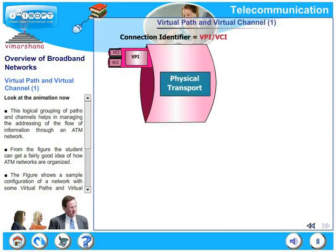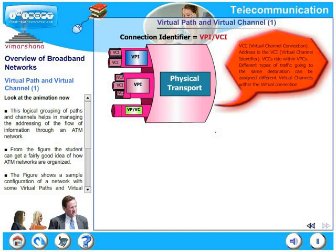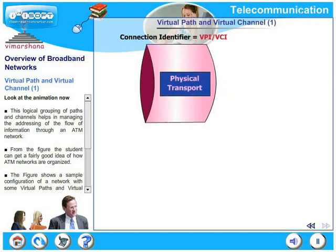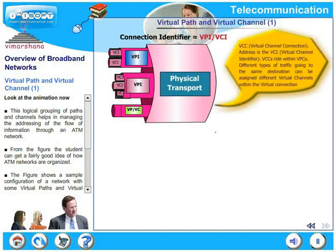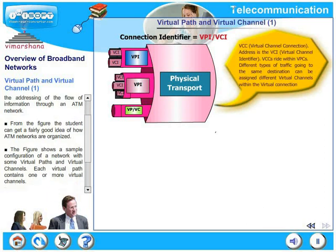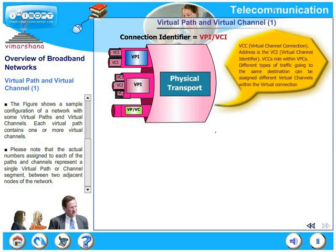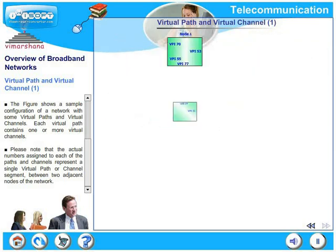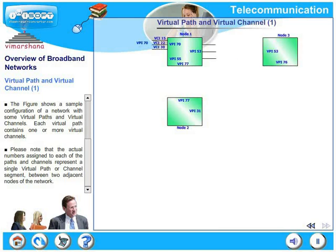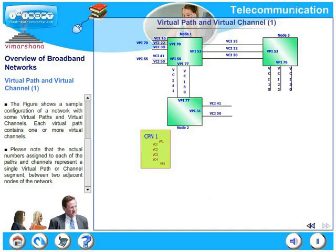The logical grouping of paths and channels helps in managing the addressing of the flow of information through an ATM network. The figure shows a sample configuration of a network with some virtual paths and virtual channels. Each virtual path contains one or more virtual channels. Please note that the actual numbers assigned to each of the paths and channels represent a single virtual path or channel segment between two adjacent nodes of the network.